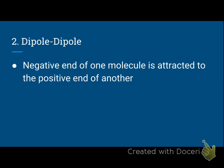The second type of intermolecular force, and the second strongest, is dipole-dipole. This is when the negative end of one molecule is attracted to the positive end of another. A hydrogen bond is actually a specific type of dipole-dipole, but dipole-dipole does not have to include a hydrogen. This type of bond includes anything with a negative end attracted to a positive end on another molecule.